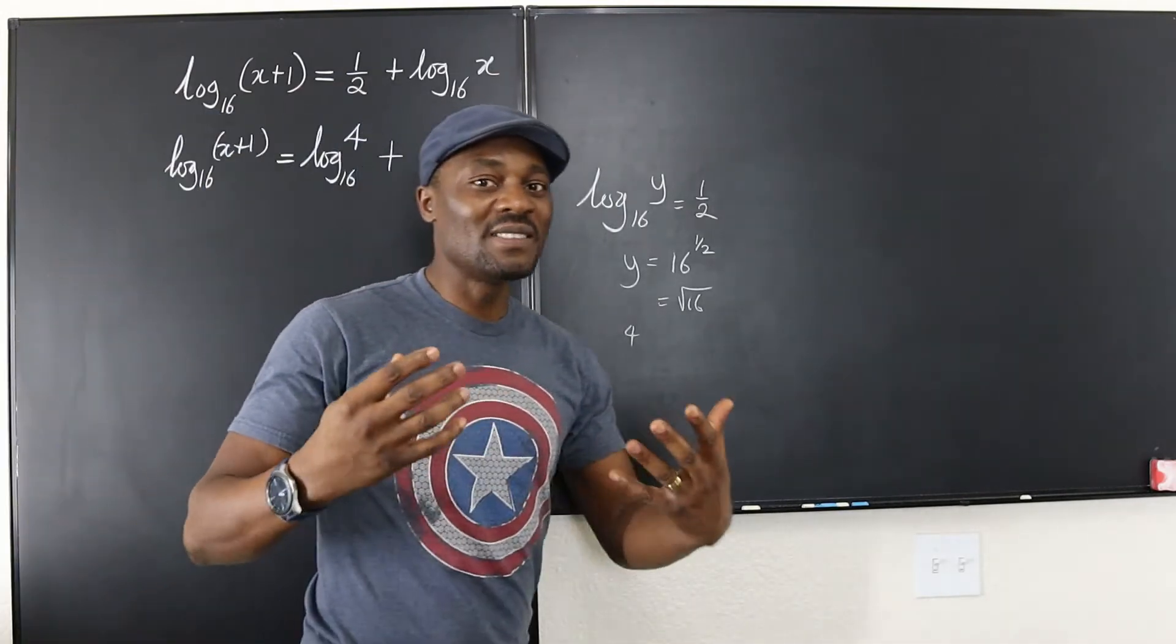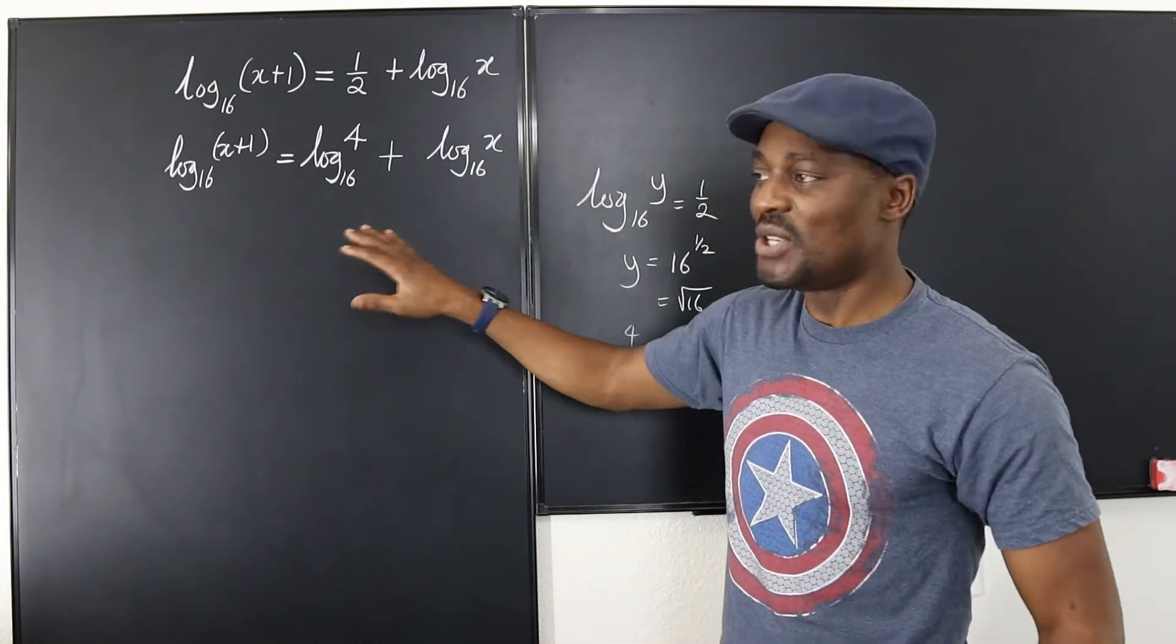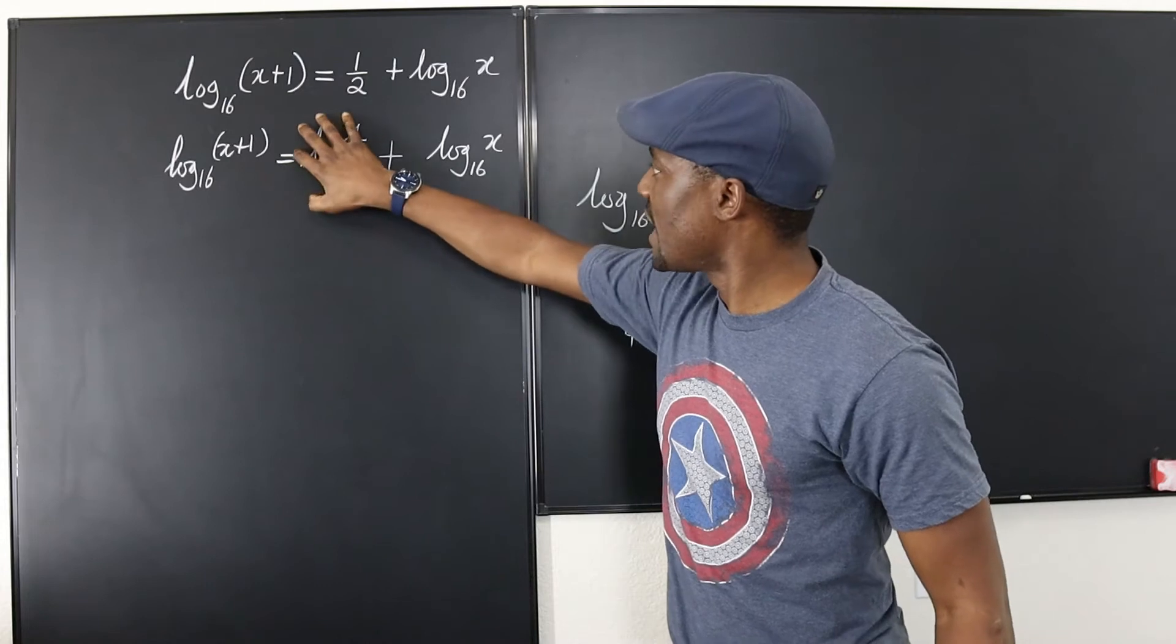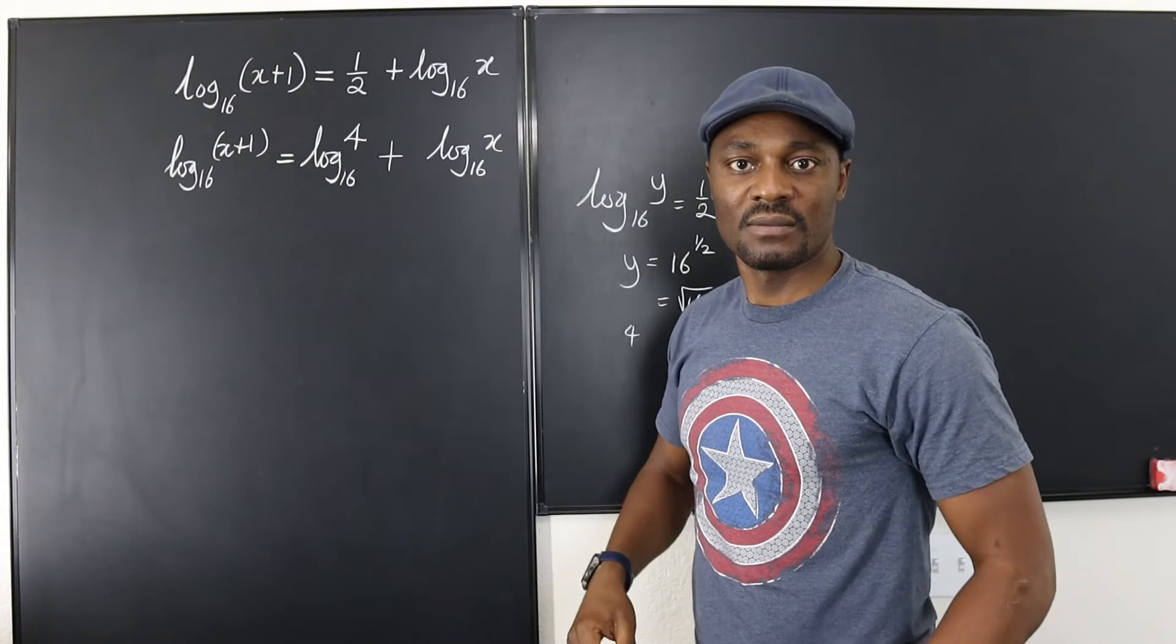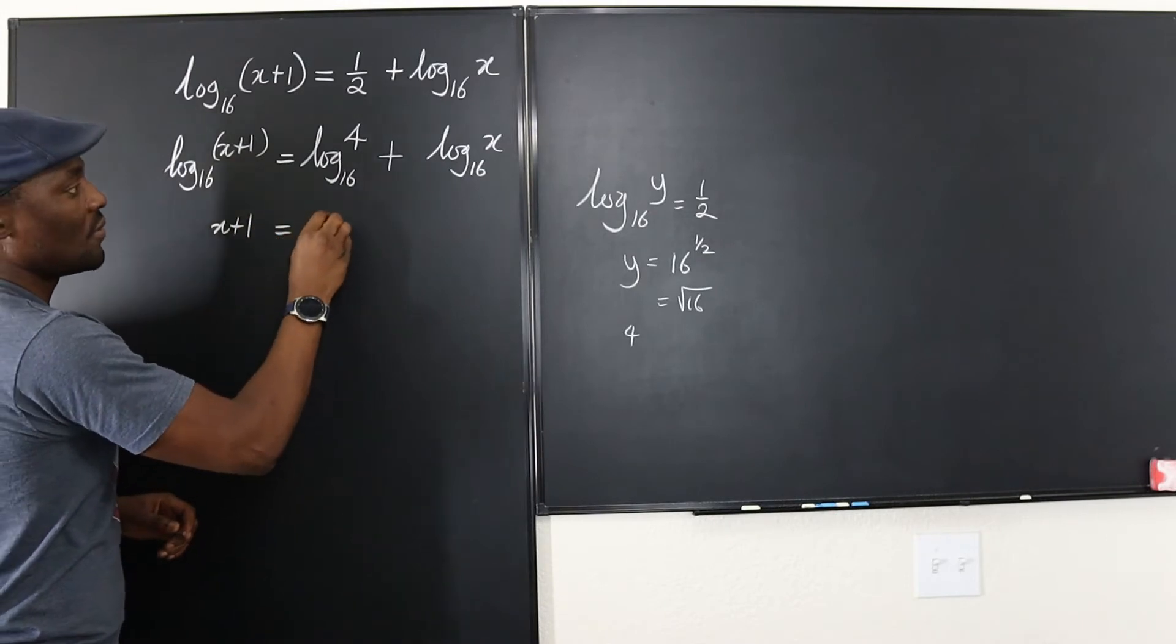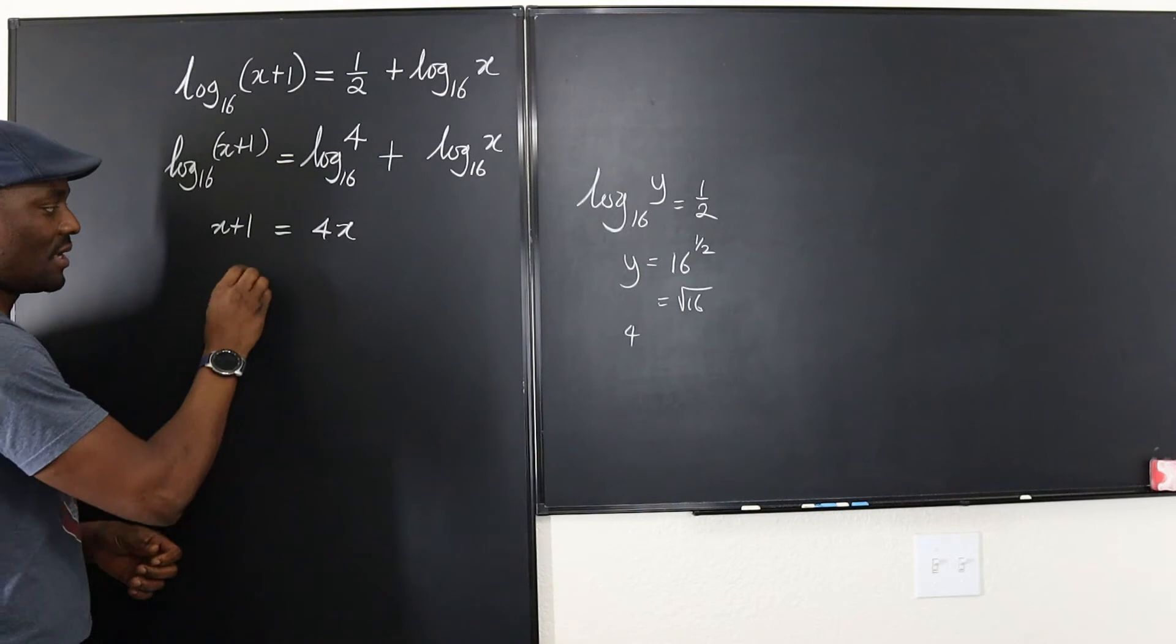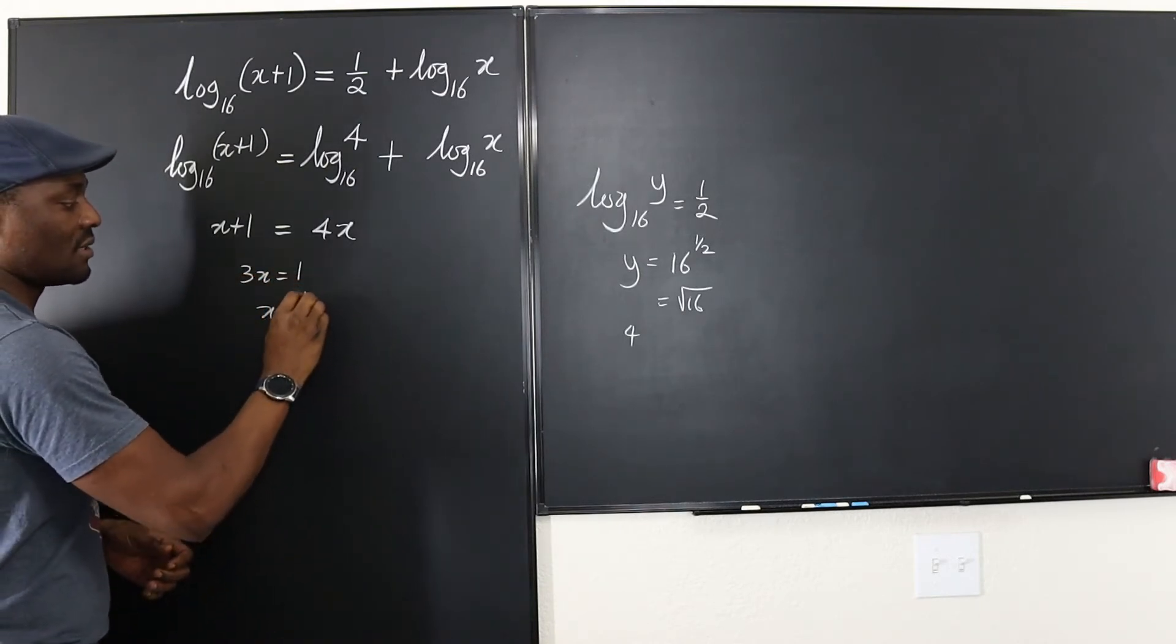So that's the only thinking that you need to do to solve this problem. Beyond this, you just need to apply the law of logarithms which says when you're adding two log functions with the same base, just multiply the arguments. That's it. So we can just say that what's here, x plus 1 is equal to 4 times x. You solve this equation and you get your answer. You're going to get 3x equals 1 and x is 1 third.